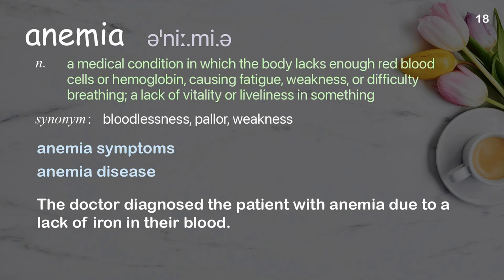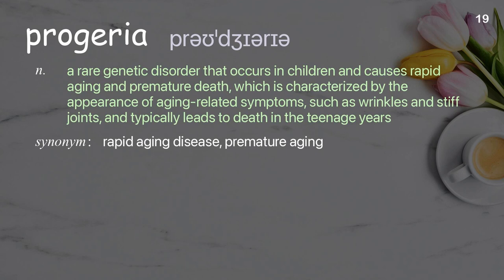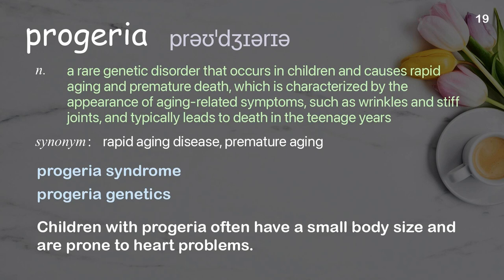Progeria: a rare genetic disorder that occurs in children and causes rapid aging and premature death, characterized by the appearance of aging-related symptoms such as wrinkles and stiff joints, and typically leads to death in the teenage years. Examples: progeria syndrome, progeria genetics. People with progeria often have a small body size and are prone to heart problems.